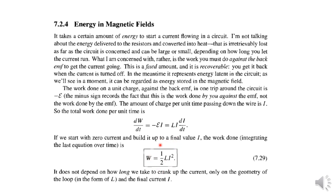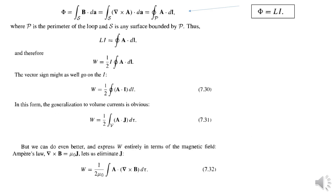This work done is equal to the energy stored. We derived this using L for a coil or conductor. Now we can generalize the equation — we can express this for a general inductor and then for the magnetic field using a more general form of inductance.